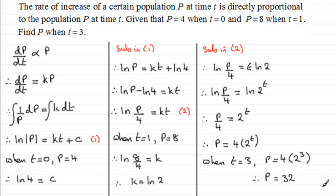So I hope that's given you an idea of how to form a differential equation, especially when it involves direct proportion. We set up dp/dt equals k times p, separate the variables, integrate, and then solve using our initial or boundary conditions to work out the constants.